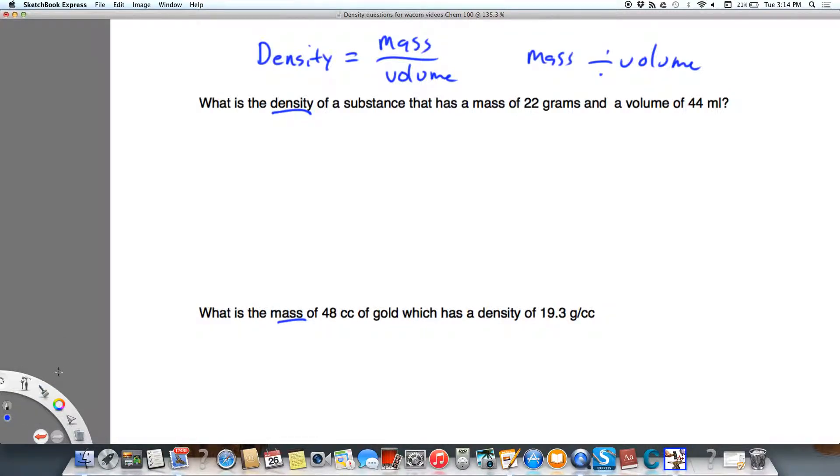So first of all, what is the density of a substance that has a mass of 22 grams and a volume of 44 milliliters? We need to remember that 1 milliliter is equal to 1 cc, which is equal to 1 centimeter cubed. Those are all equivalent units.